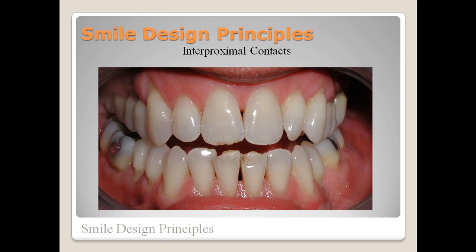The interproximal contacts can also influence the shape of the teeth. Longer contacts make the teeth look more square, and shorter contacts make them look more tapered. Even the position of the contacts in relation to the interproximal bone is important in creating optimal gingival contours, since research has shown that the interproximal papilla does not fill the space predictably if the contact is more than 5 mm away from the interproximal bone. A small contact close to the incisal edge creates the dreaded dark triangle, even in the presence of good gingival health.